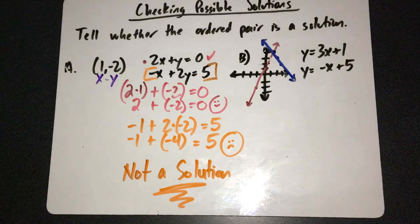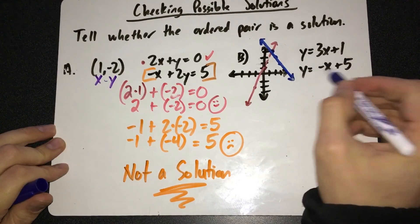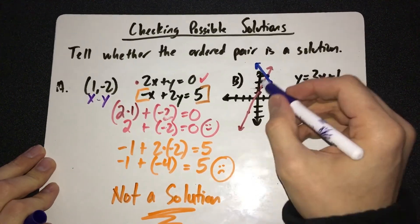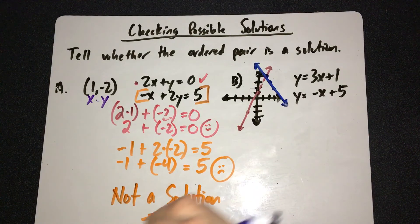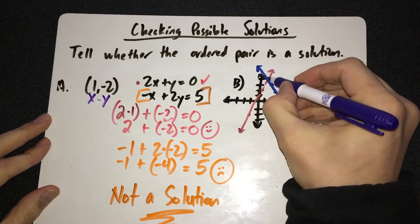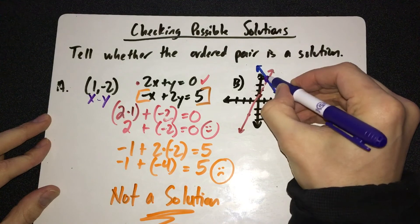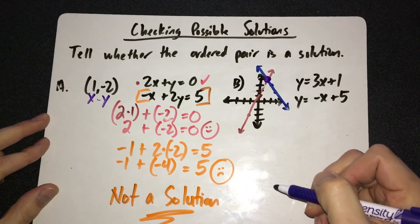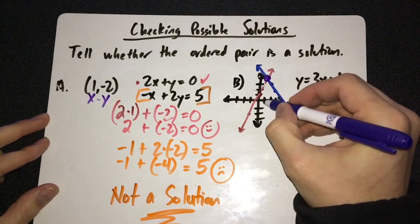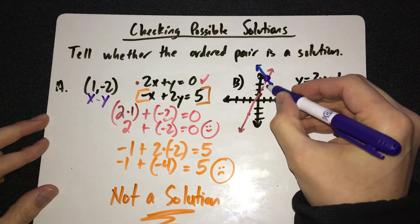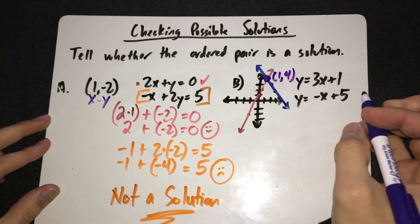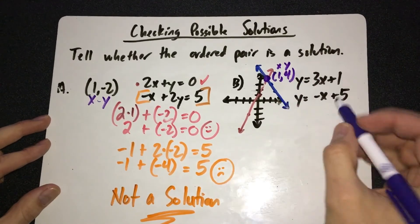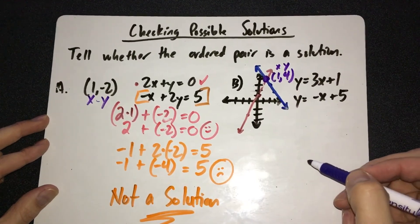The other type of question will give you the system of equations and an actual graph. The graph is not there to confuse you — all you need is to find the point where the lines intersect. The point where the lines cross is 1 to the right and 4 up, so the point is (1, 4). The question is asking: put 1 in place of x and 4 in place of y, and see if you get the right answer.